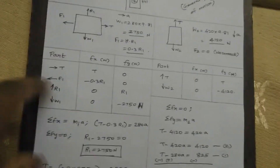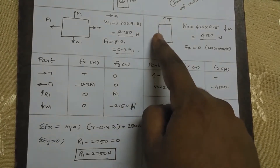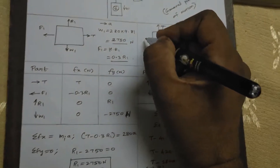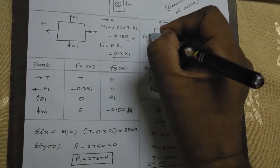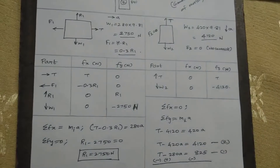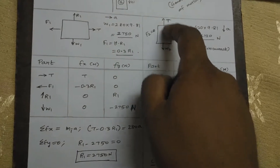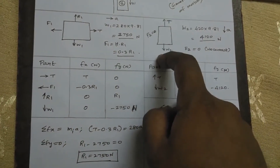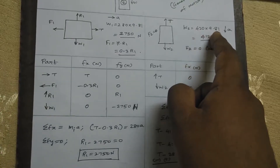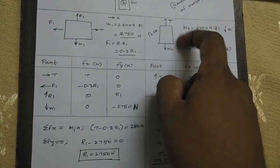Regarding the second block: the second block is not in contact with the surface, so F2 will be equal to zero. There is no contact friction. The cable tension is T and the weight W equals mass 420 times 9.8, which is 4120 Newtons.